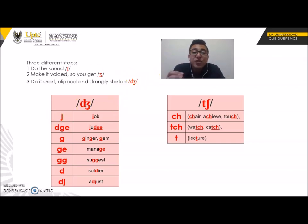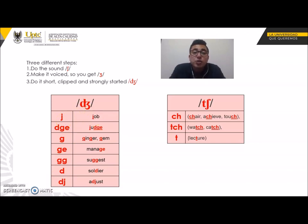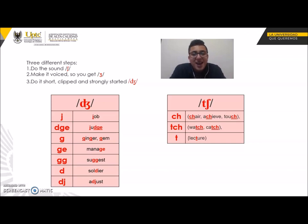Now let's look at some examples with spelling patterns. Every time you see certain letters you'll know which sound they produce. For the voiced affricate /dʒ/, we have: job, judge, ginger, gem, manage, suggest, soldier, and adjust. Pay attention to the letters that signal this sound.